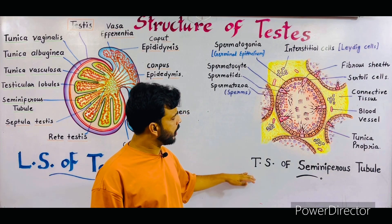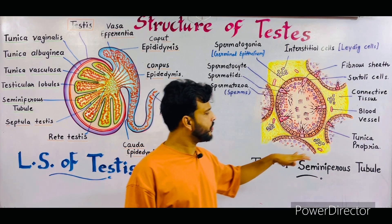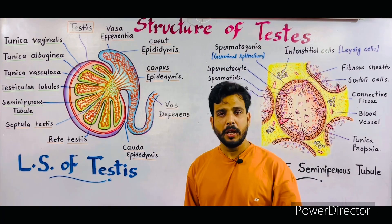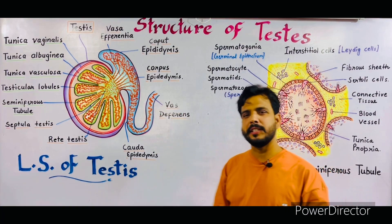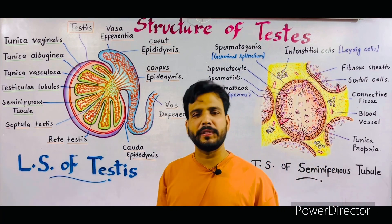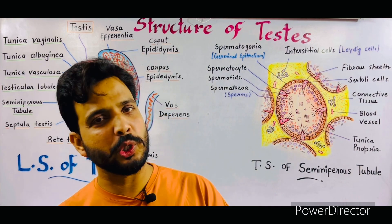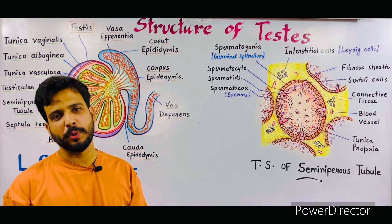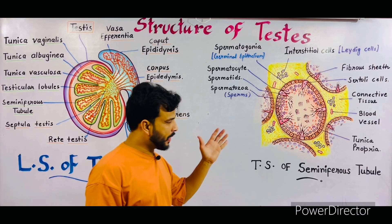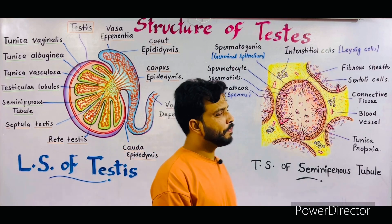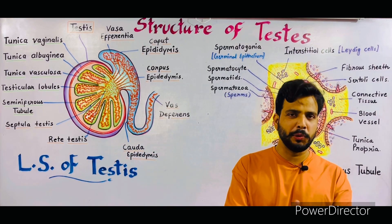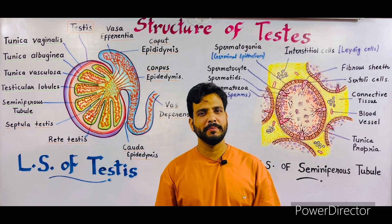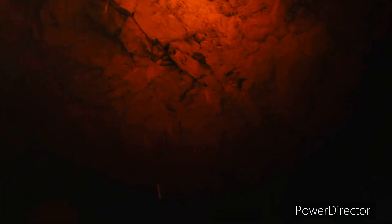So I told you about the TS of seminiferous tubules and the detailed structure. It was all about the LS of testis — the structure of testis, morphology, anatomy, histology, and the detailed structure of seminiferous tubules. I think the topic is very clear to you. Still, if you have any question, any query, any suggestion, you can ask in the comment section. Thanks for watching. Have a good day.